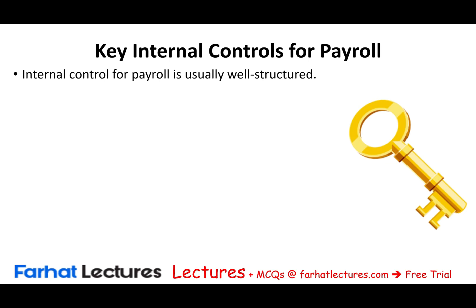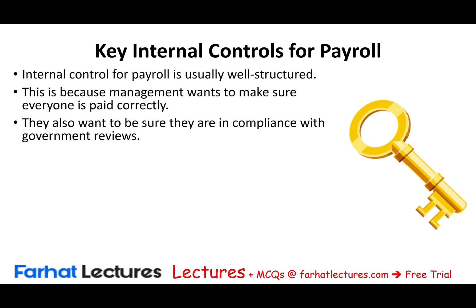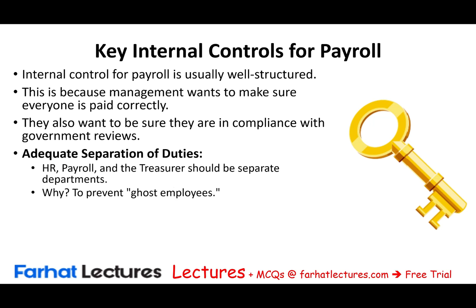Key internal control for payroll number one is adequate separation of duties. We talked about HR, payroll, and treasurer — those three should be separate. The main risk with payroll is ghost employees — employees that don't exist but are added to the payroll to receive payment. With separation of duties, only HR can add employees, payroll determines the pay, and the treasurer cuts the check. You don't want the same person adding someone, determining their pay, determining their time card, and cutting the check.